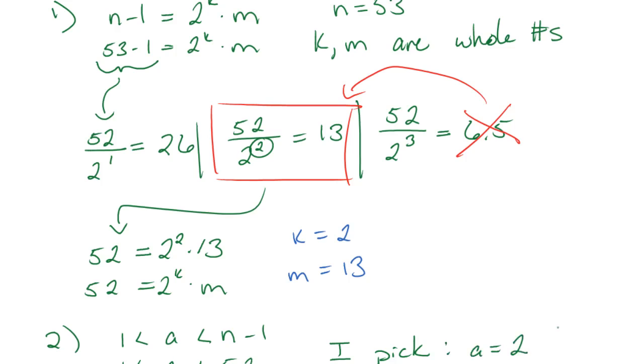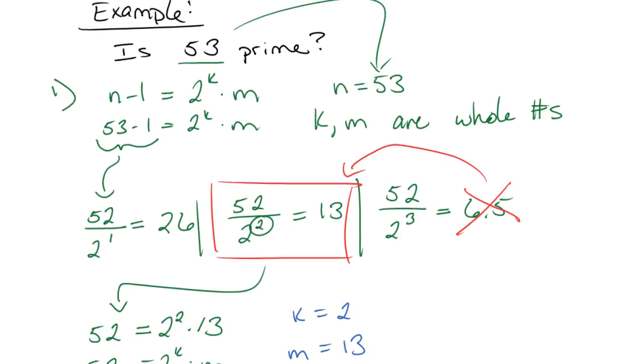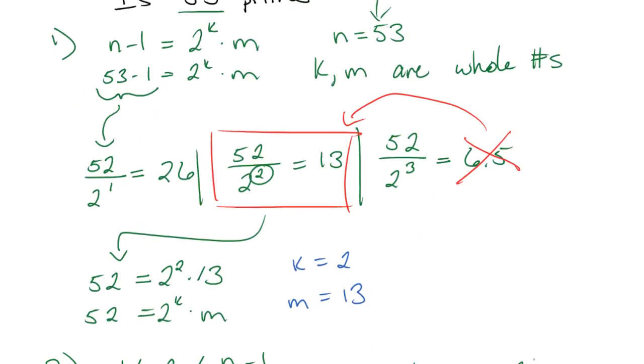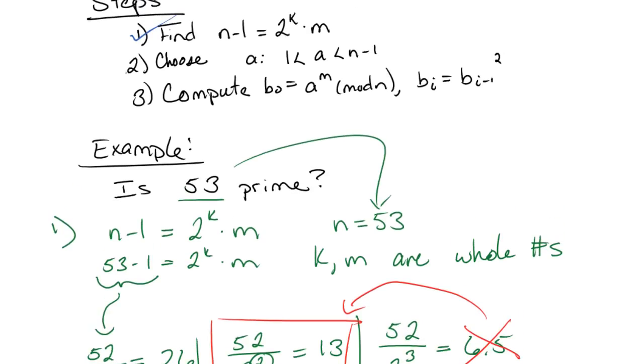I'm going to pick a equals 2. I could have picked a equals 5. I could have picked a equals 15, a equals 45. It doesn't really matter, just as long as it falls in these parameters. I just picked 2 because 2 is a smaller number, which makes it a little bit easier to work with. Okay, so we have picked our a value. That was step 2.